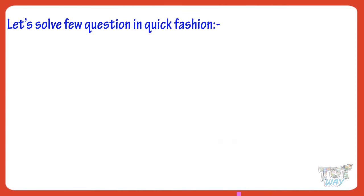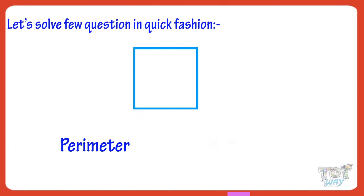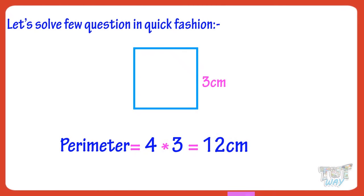Let's solve a few questions in a quick fashion. Parameter of square with side 5 cm will be 5 multiplied by 4, equals 20 cm. Parameter of square with side 3 cm will be 4 multiplied by 3, equals 12 cm.